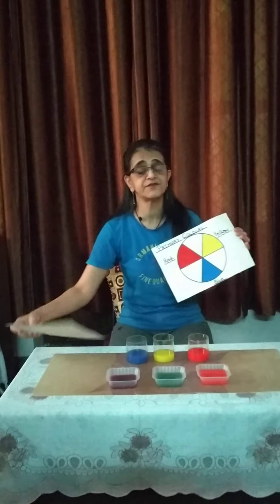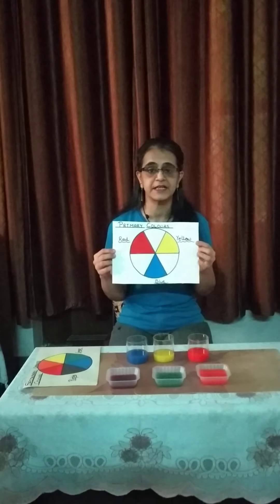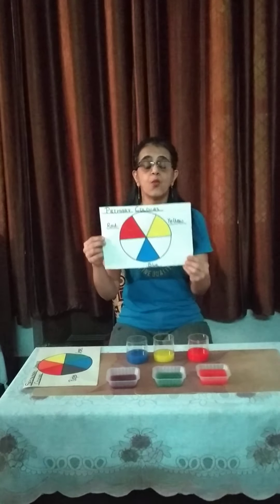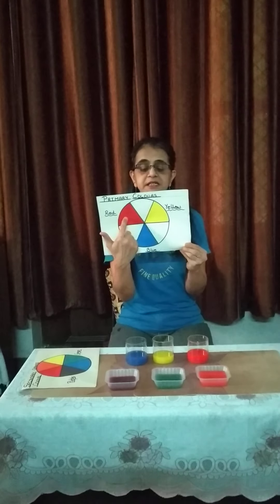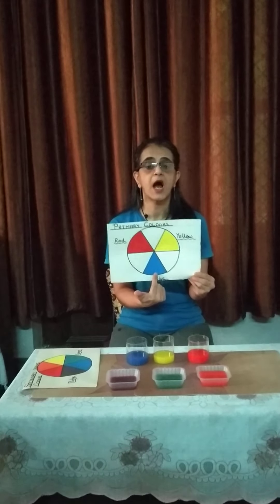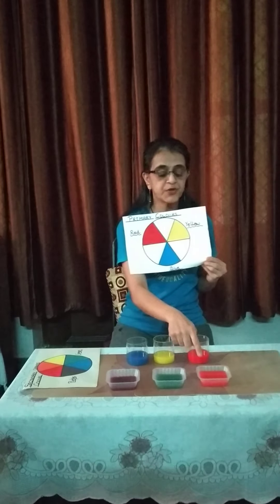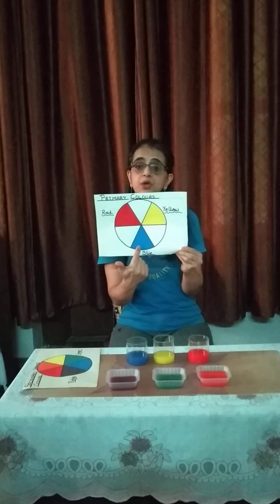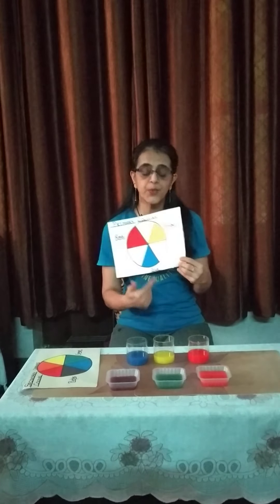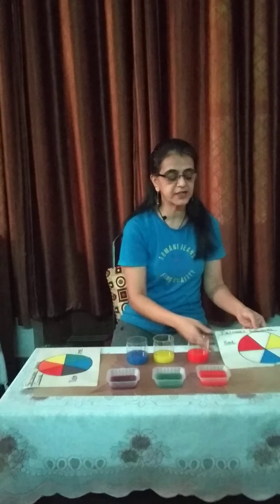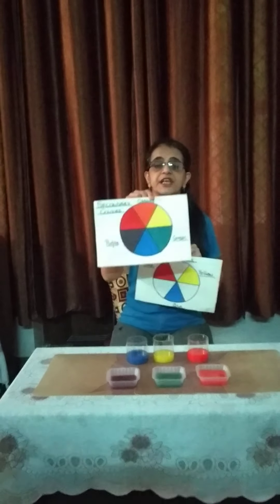You should do this activity with your parents. Mix the primary colors to get the secondary colors and you will really like it. Red, yellow, and blue are primary colors. By mixing red and yellow, we get orange. By mixing red and blue, we get purple. By mixing blue and yellow, we get green. This is the primary color wheel and this is the secondary color wheel.